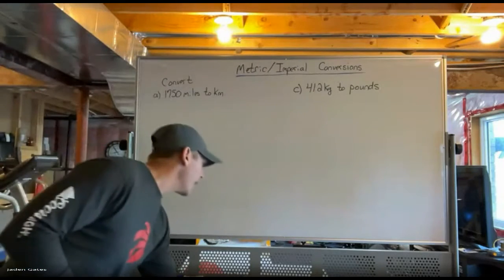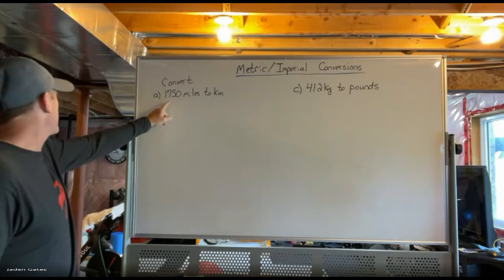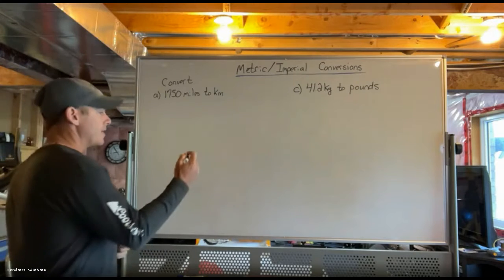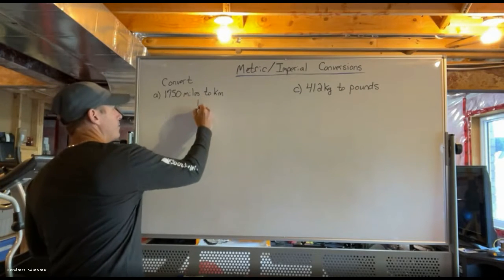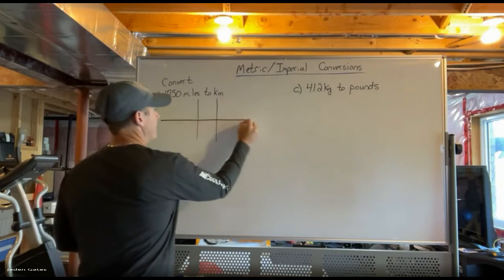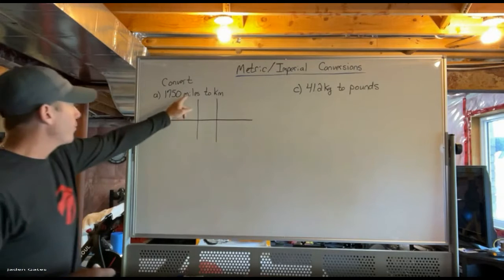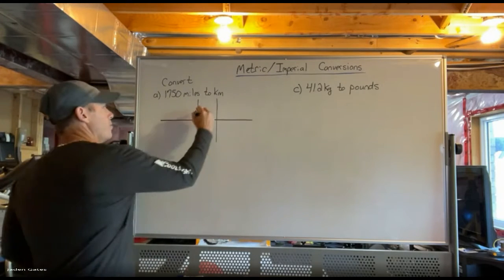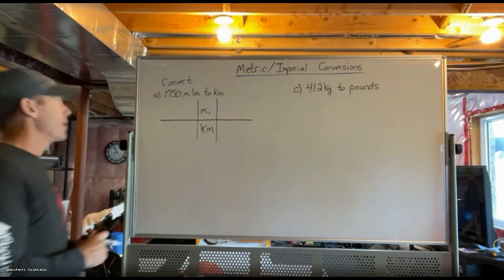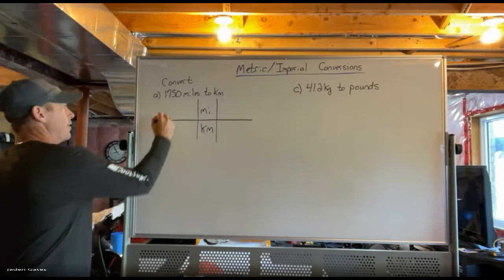My first question: I want to convert 1,750 miles to kilometers. Just like I did the other day, I'm going to create a table. I'm dealing with miles and kilometers, so I put my units in the middle — miles and kilometers — and I have 1,750 miles.